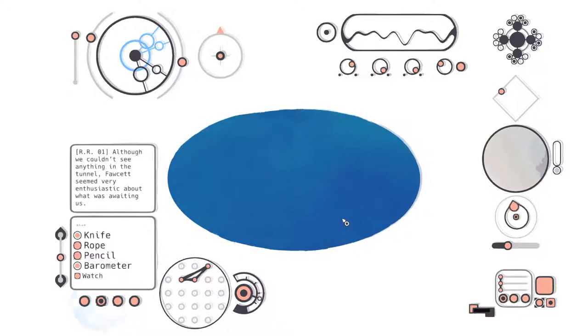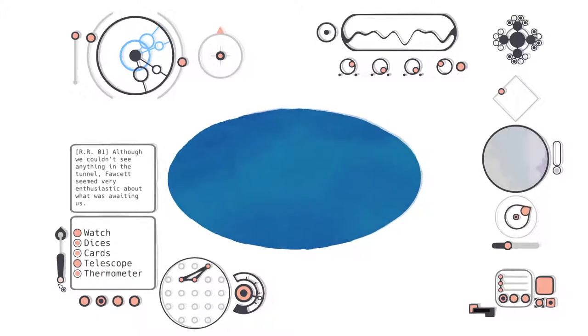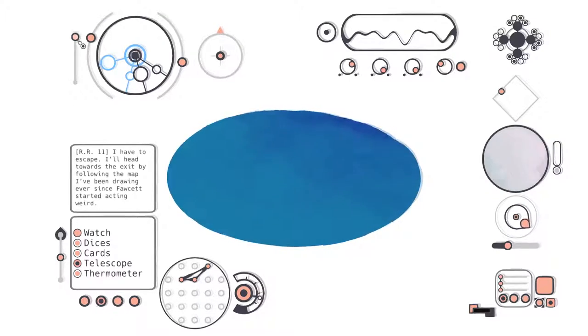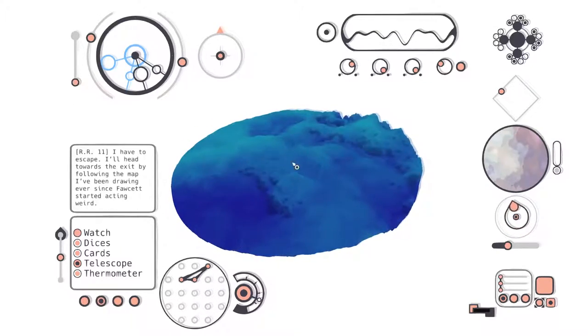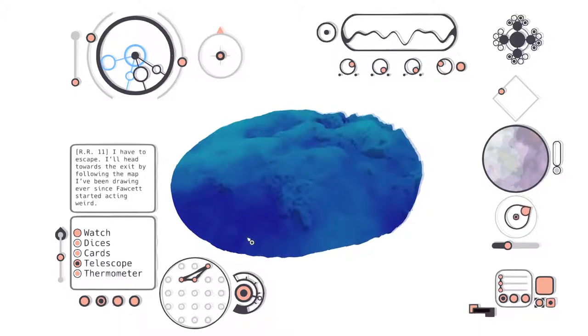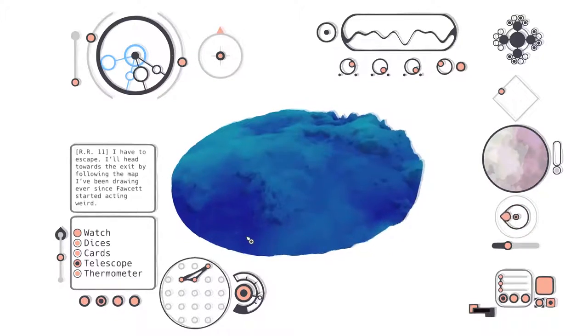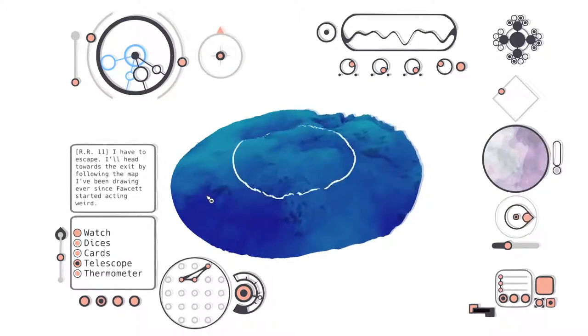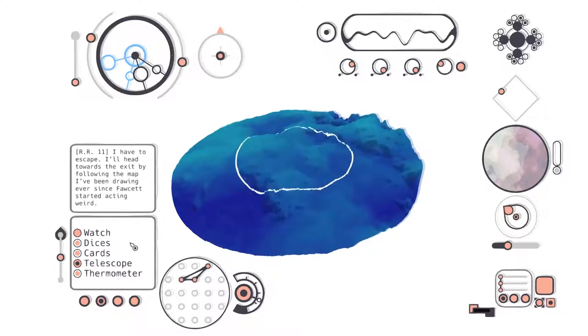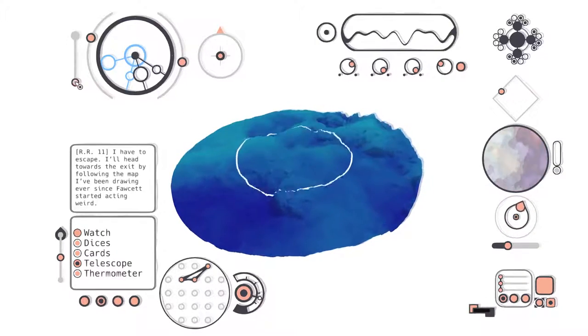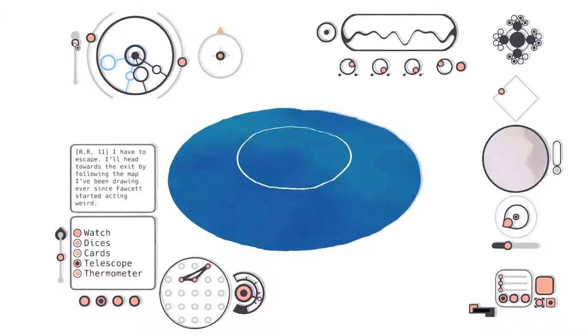See, this is why I don't play puzzle games. Cause like... Even this... Like, this is my kind of puzzle game. It's like... Simpler. And like... It's more of an overarching mystery than, you know... Here's this very, very, very specific solution you need to find out. I have to escape. I'll head towards the exit by following the map I've been drawing ever since Fawcett started acting weird. Damn it, Fawcett! I knew it was Fawcett. We punched him once, you know.